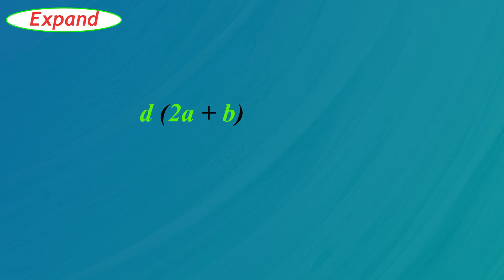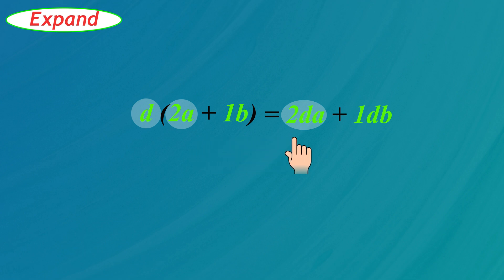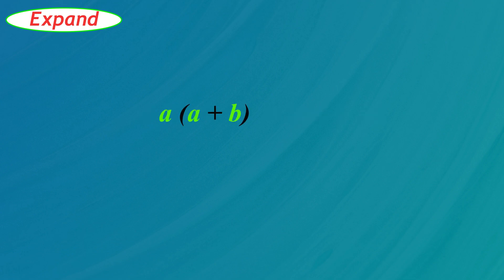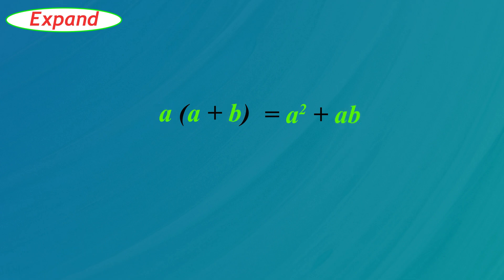Expand D times 2A plus B in parentheses. In this example the multiplier is the variable D. Also remember that there is a 1 in front of the B. So D times 2A is 2DA and D times 1B is 1DB. In algebra we don't write the 1 and letters are usually written in alphabetical order, so the final answer is 2AD plus BD. Now expand A times A plus B in parentheses. A times A is A squared and A times B is AB, so the answer is A squared plus AB.